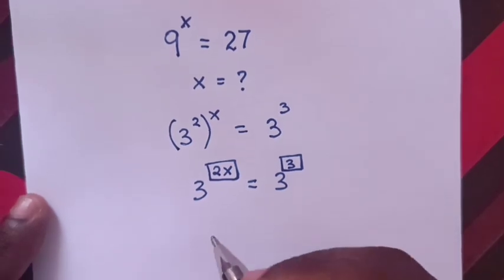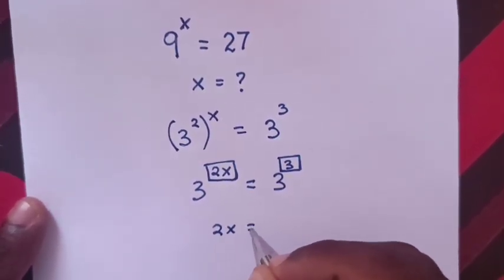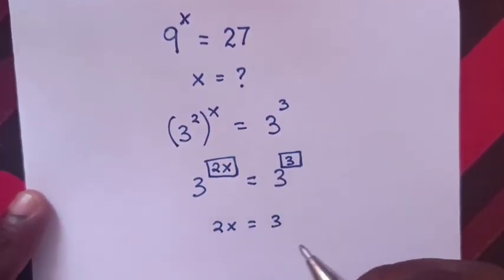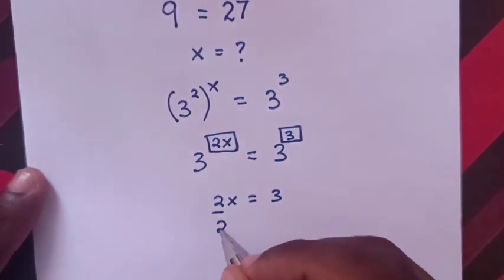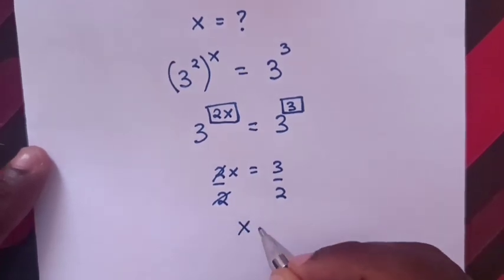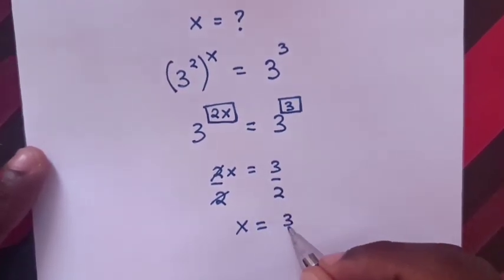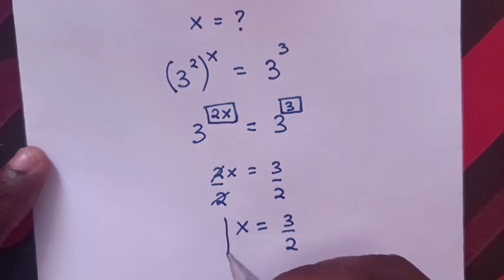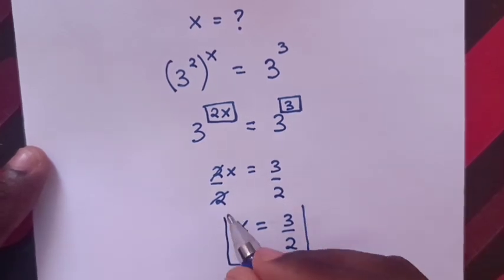Then, 2x, it will be equal to 3. Then, we divide by 2 in both sides. So, 2 will cancel with 2. Then, x is equal to 3 over 2. So, this is the value of x.